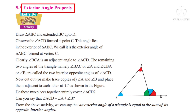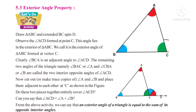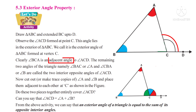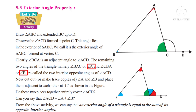For this, let us do an activity. Draw a triangle ABC and extend BC up to D. An exterior angle ACD will be formed at the vertex C. The angle BCA shown in green color is an adjacent angle to the exterior angle. The remaining two angles are angle A shown in red color and angle B shown in blue color. Angle A and angle B are the two interior opposite angles of the exterior angle ACD.